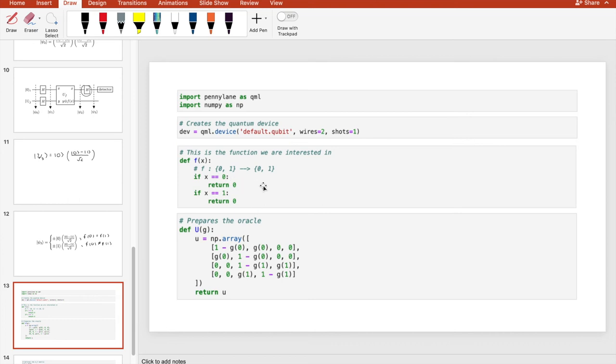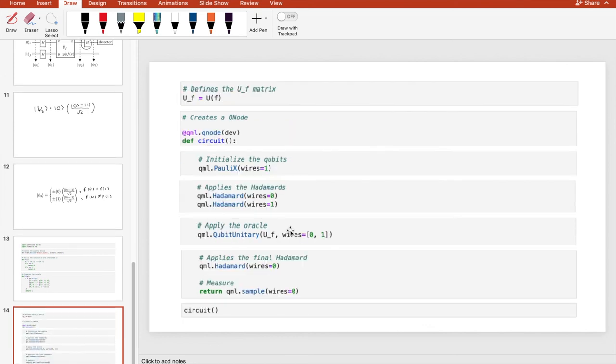Now we must prepare the oracle, which is the array shown in the code here. This is mathematically how the qubits are acted upon when passing them through the unitary matrix. As seen here, we actually define the unitary matrix by calling the function with the oracle we just created.